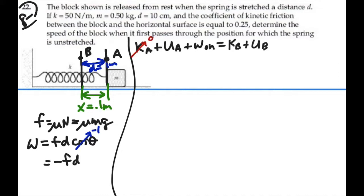We do have a spring stretched at point A, so we do have potential energy at A. No gravitational potential energy at A or B because this level is defined as our zero height. So the potential energy at B will be zero because the spring is no longer stretched at that point.